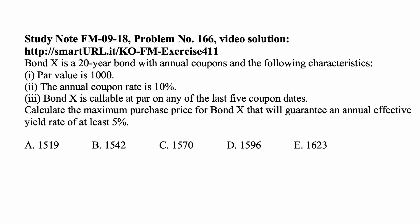Here is a problem for today for Exam FM on financial mathematics. Bond X is a 20-year bond with annual coupons and the following characteristics: par value is 1000, the annual coupon rate is 10%, and Bond X is callable at par on any of the last five coupon dates.